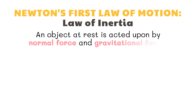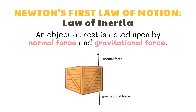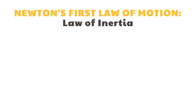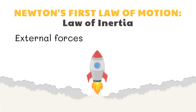Let us consider an example of an object at rest. The box is acted upon by normal force and gravitational force. These forces balance each other and no other force is acting on the box, thus the box remains at rest.